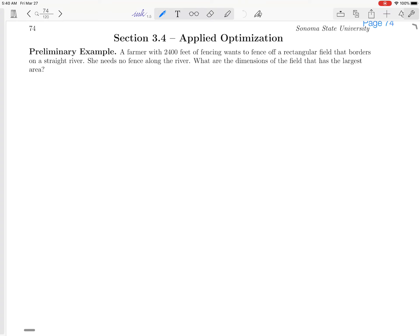This is the beginning of section 3.4 on page 74 of your workbook, and the topic of this section is called applied optimization. This is a word for problems where we're trying to find the maximum or the minimum value of a function in an applied situation.